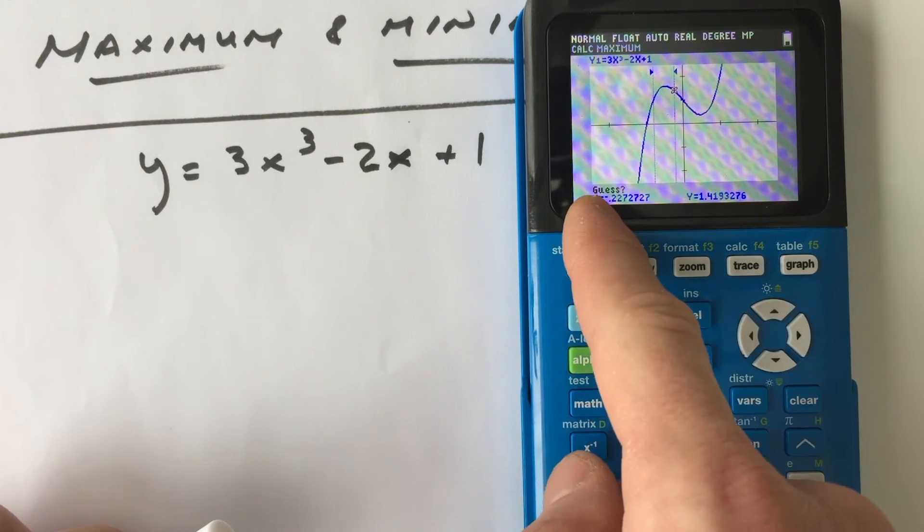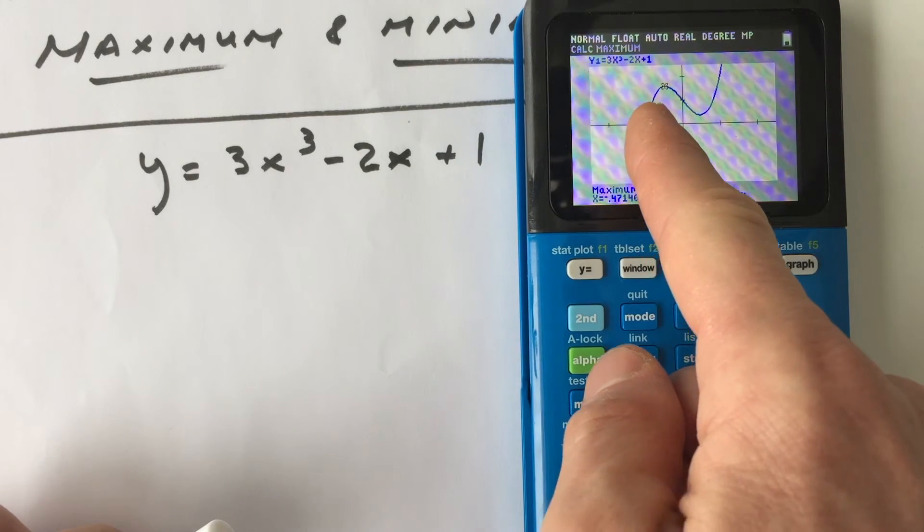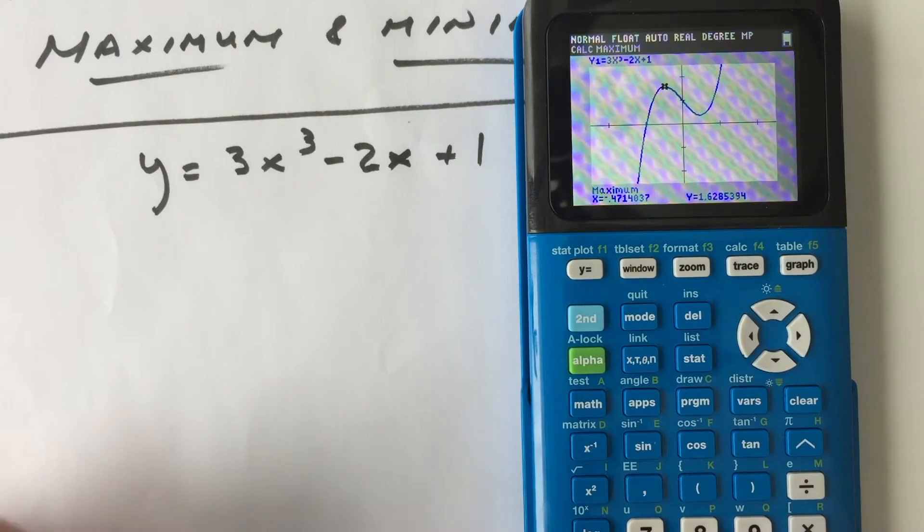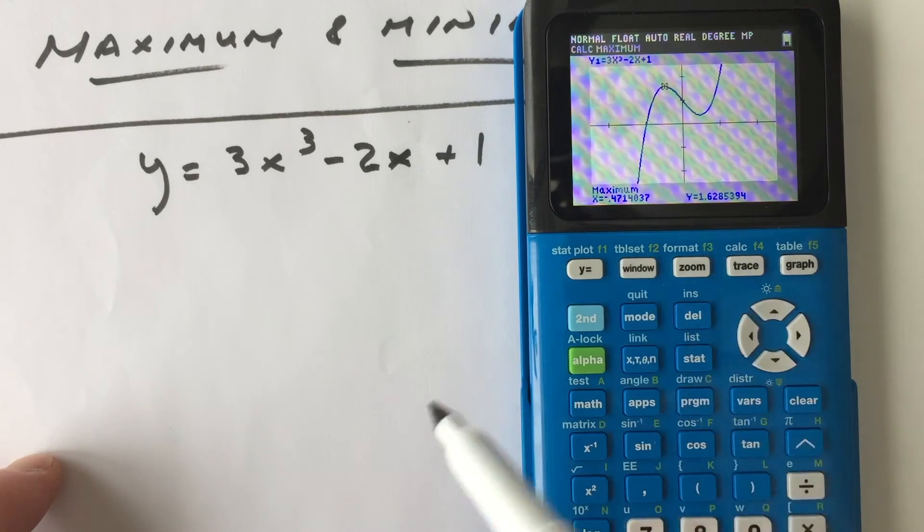And then you see how it says guess. So you want to hit enter one more time and it's going to find that highest point in between those two points that you selected there. So what we want now are the coordinates and you can see that's going to be negative 0.47 comma 1.6.